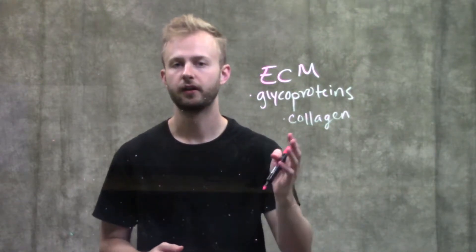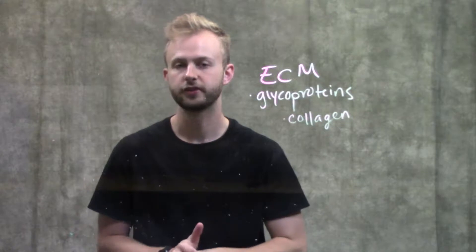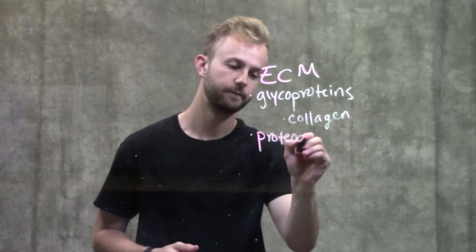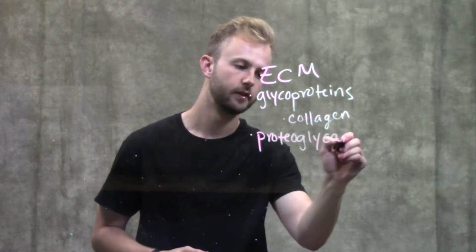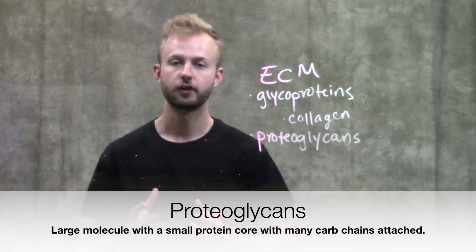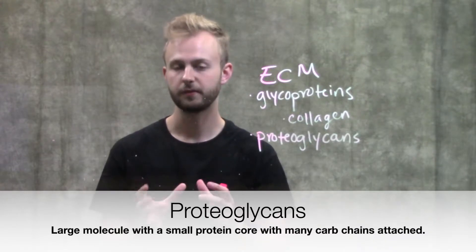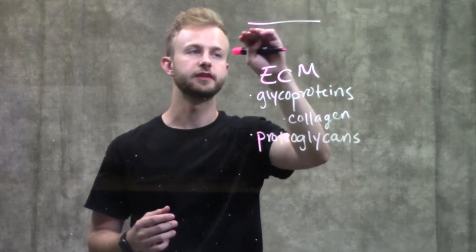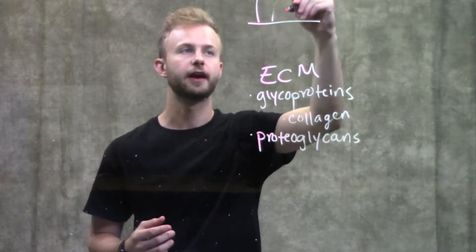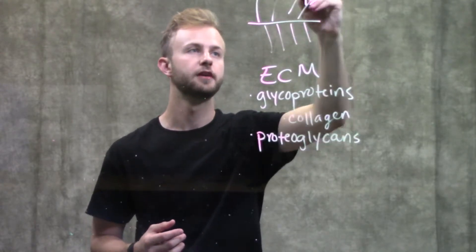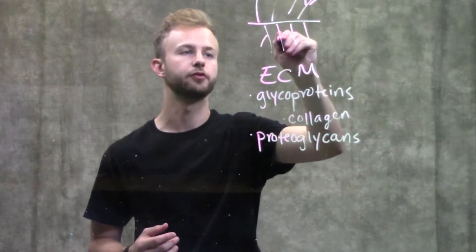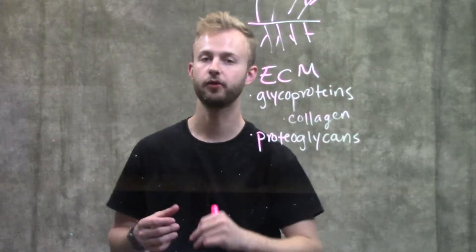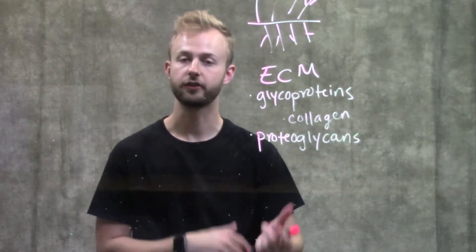You also have some other components in the extracellular matrix. You'll have something called proteoglycans. Proteoglycans are molecules that have a small protein core. So we'll just say this is the protein core, but then they're going to have a bunch of carbohydrates that come off of that protein core. Proteoglycans, even though they do have this protein component, are actually mostly carbohydrates.